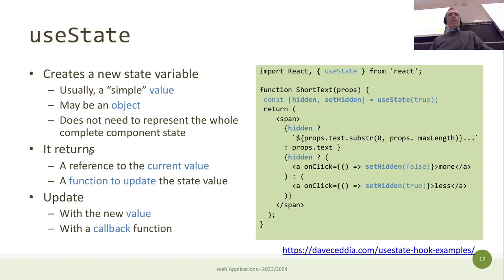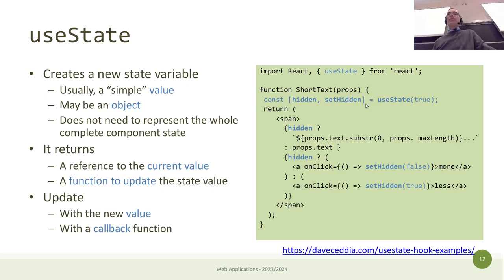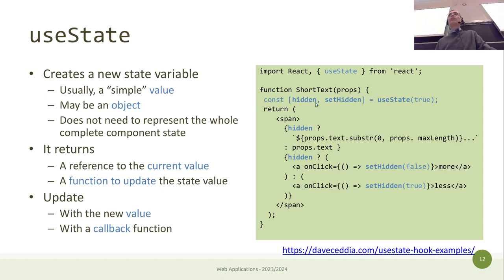useState returns two values. The first is the actual value of the state, and the second is a reference to a function to be called to change the state. On the left is a destructuring assignment — a JavaScript construct to get two return values from a function. The first value is the state value, which can be a number, object, array, etc., and the second is a reference to the setter function returned by useState.